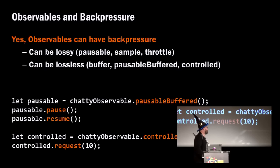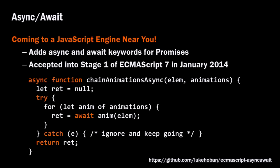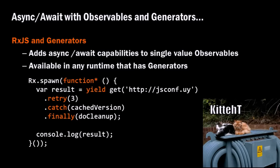We have back pressure as well — pause and resume capabilities for those concerned about traffic. And async/await is coming to JavaScript in ES7/ES2016, but you can already do that today with the spawn function inside of Rx, where you can do retry, catch, and finally all of that and then log the result. We have that today — you're already living in the future.